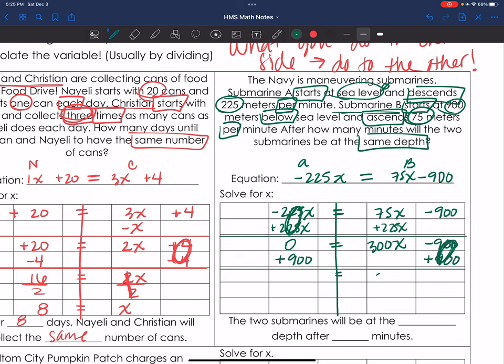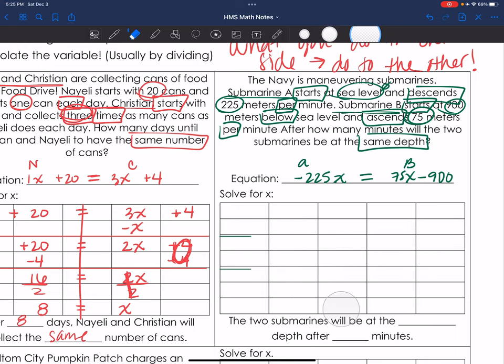So that zeroes out. Bring down my 300x. Bring down 0 plus 900 is 900. And now I'm going to divide both sides by 300x equals 3. Okay, let me show you how to do this without doing extra steps. I was going with my eraser. There we go. Okay, I have negative 225x equals 75x minus 900. Drawing my line.